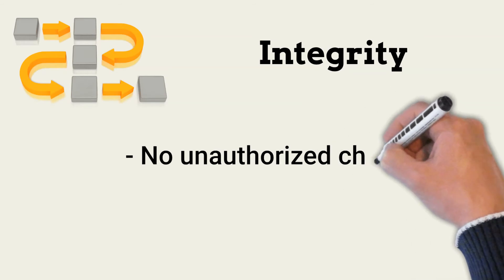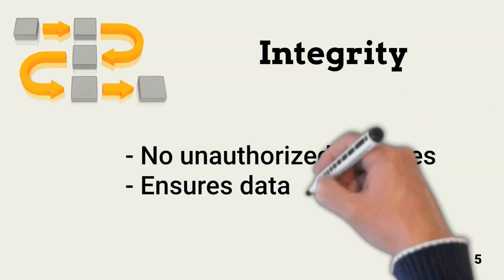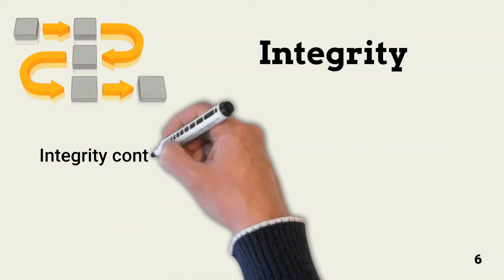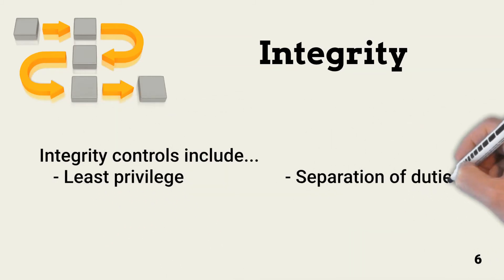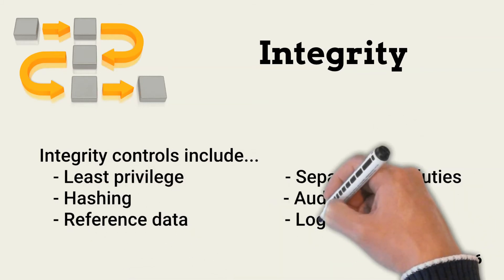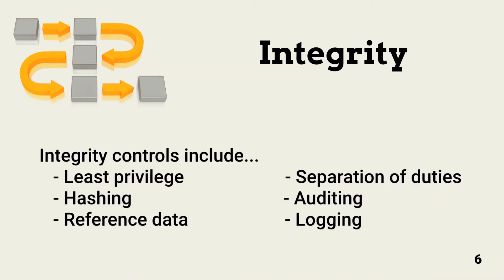The objective of integrity controls is to ensure no one makes unauthorized changes to data. This is also affected by statutes like HIPAA. Integrity controls include least privilege that only allows explicitly allowed tasks. Hashing helps ensure a file has not changed. Auditing and logging are important controls across both confidentiality and integrity to ensure that only the behaviors expected are those that we are actually seeing.